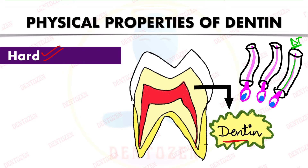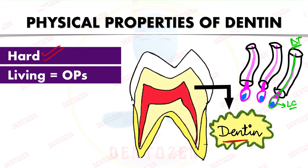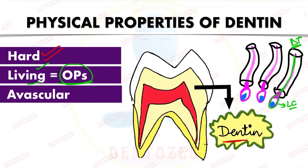Because dentine contains odontoblastic cell processes, which are living cells, dentine is considered a living tissue. It is avascular — blood vessels are present in the pulp and not in dentine.